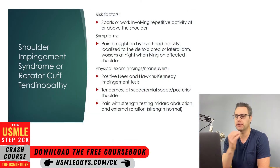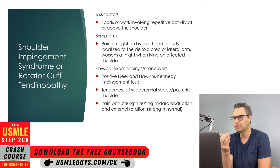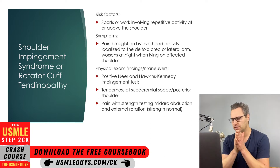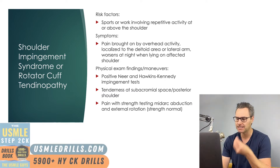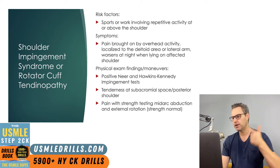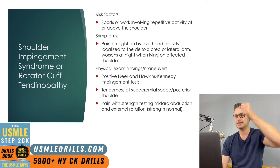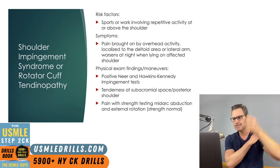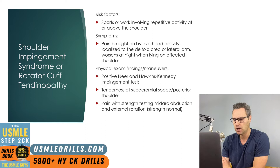Let's start with shoulder pain. The first condition we're going to discuss is the most common cause of shoulder pain, which is shoulder impingement syndrome or rotator cuff tendinopathy. The risks associated with this condition include any activity that involves repetitive motion at or above the shoulder — athletes performing throwing motions, baseball players, football players, or those with occupations involving similar overhead motion, like painters. Anything repetitive and overhead should be considered.